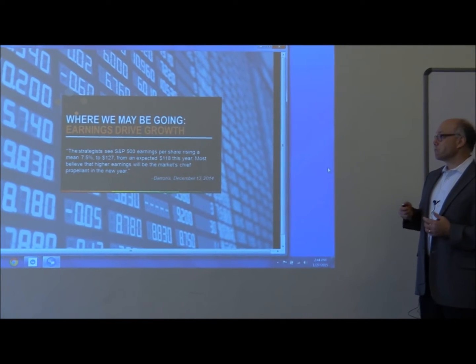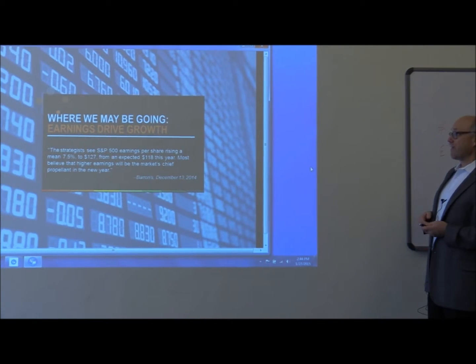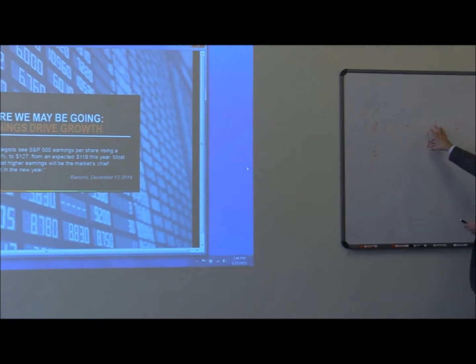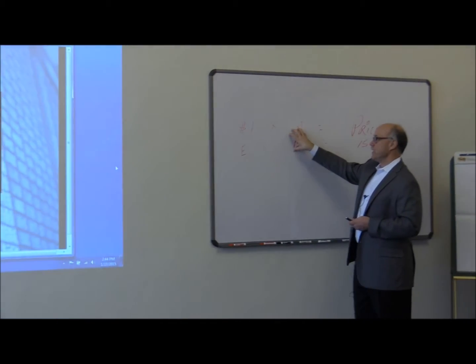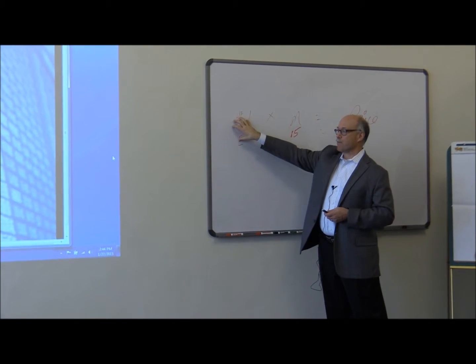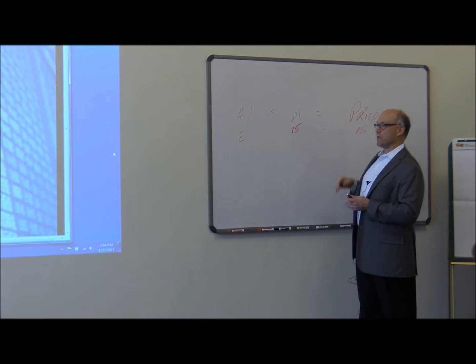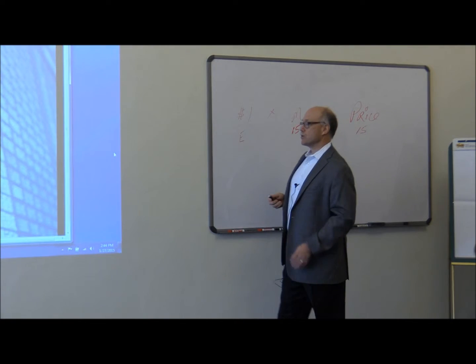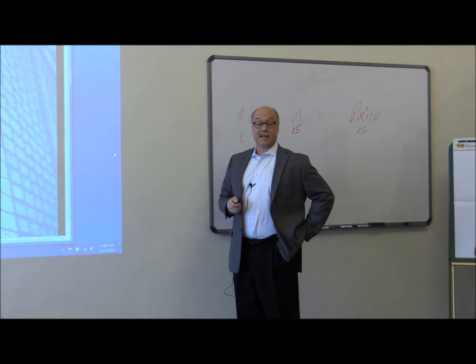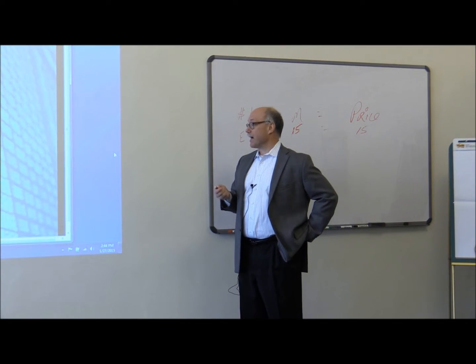Earnings growth, they're saying, we should get 7.5%. So even if this stays at the 16.3 and this climbs at 7.5%, the U.S. stock should be in that 7 to 8% range this next year. Now that's not huge, but it's at least a positive number.